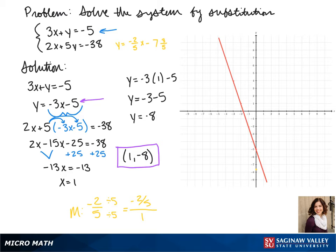This is convenient for us here because negative 8 is 2 fifths away. So we can go down 2 fifths and over 1. And it lands us on a point that has no fractions and happens to be our solution.